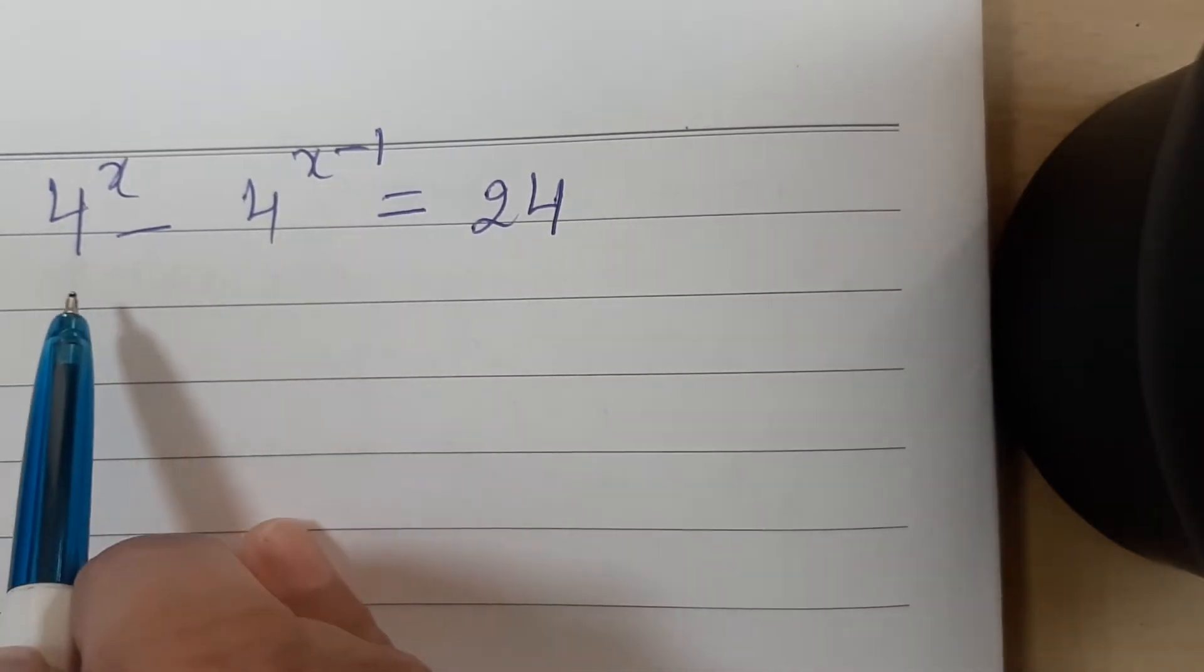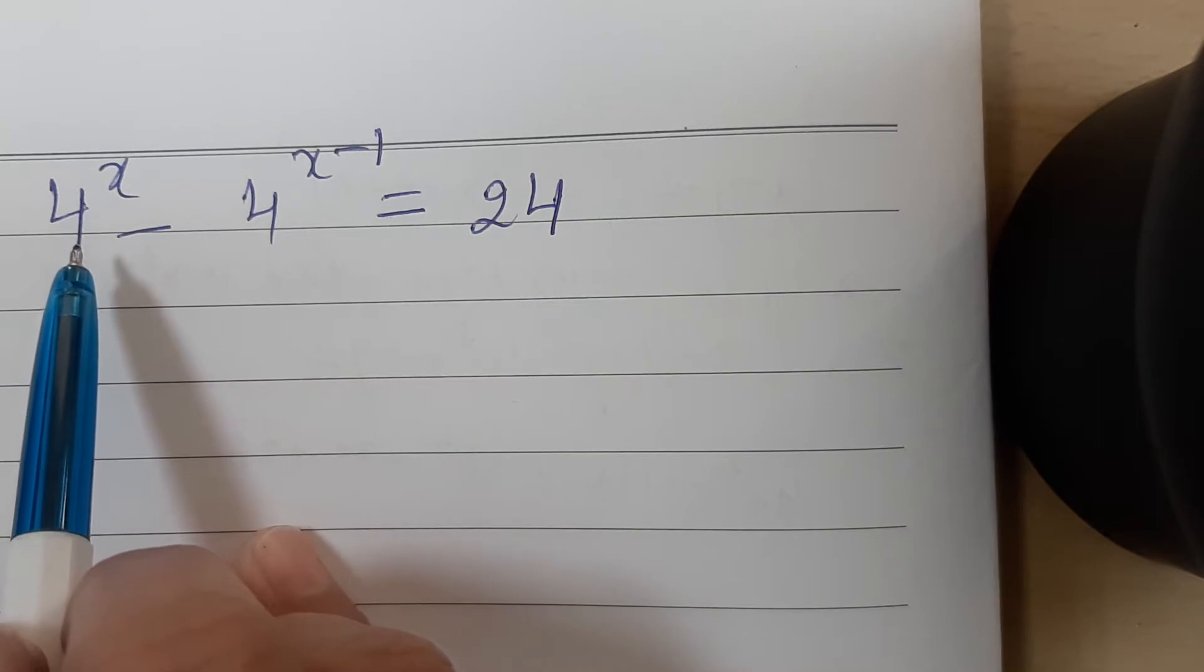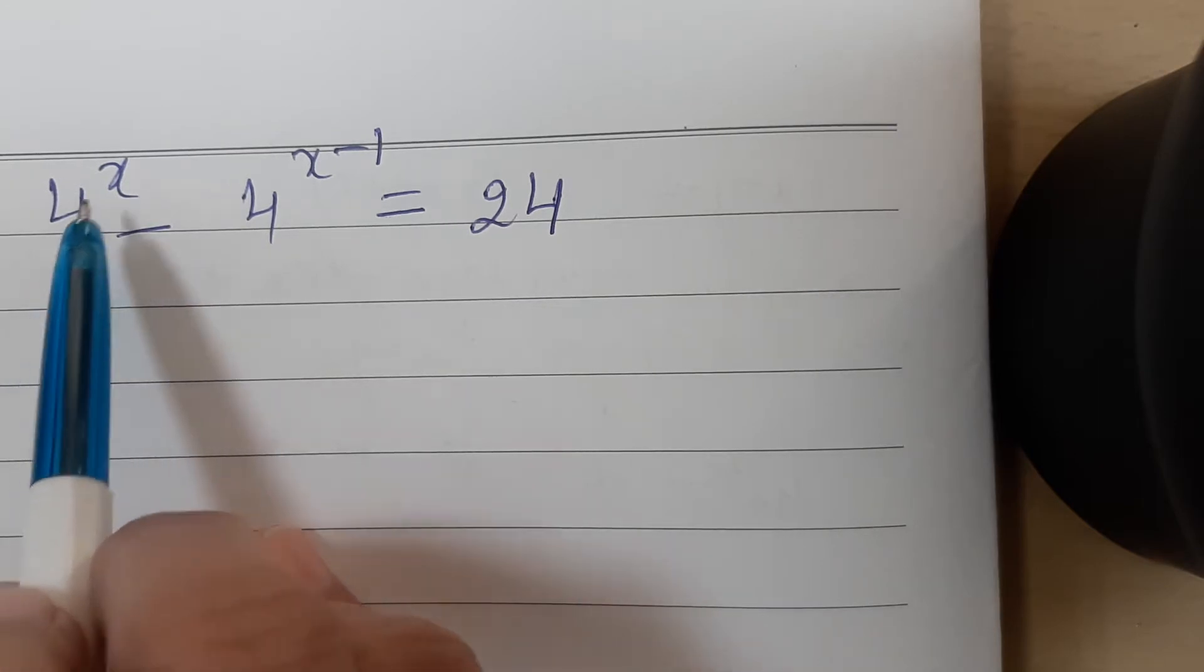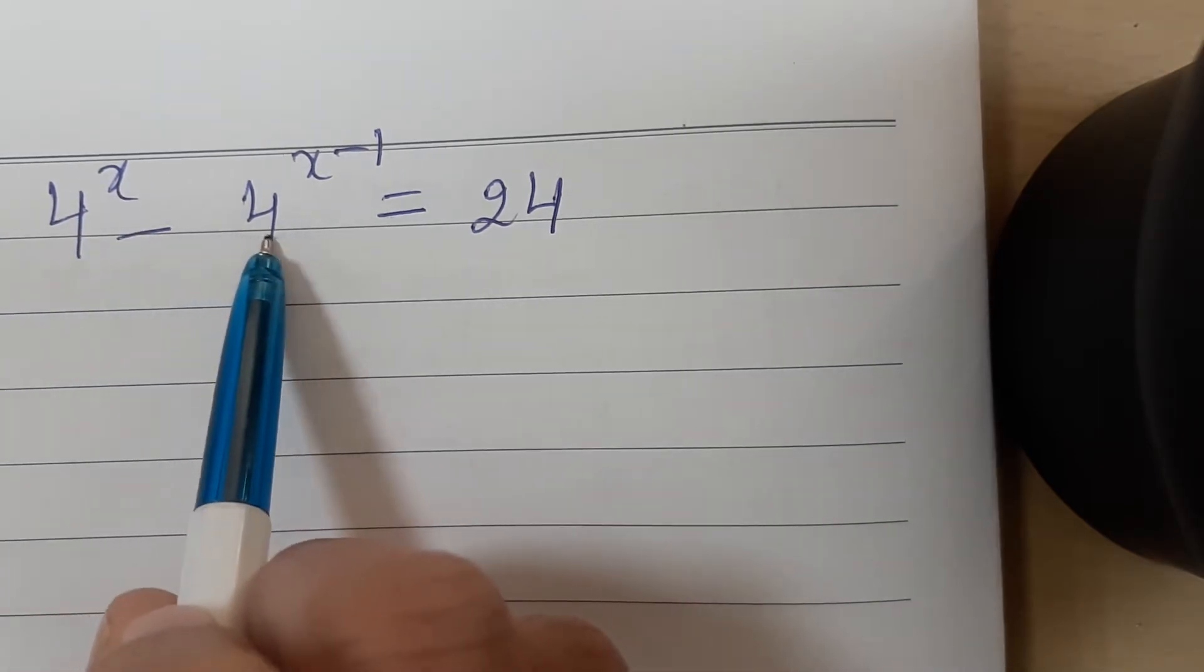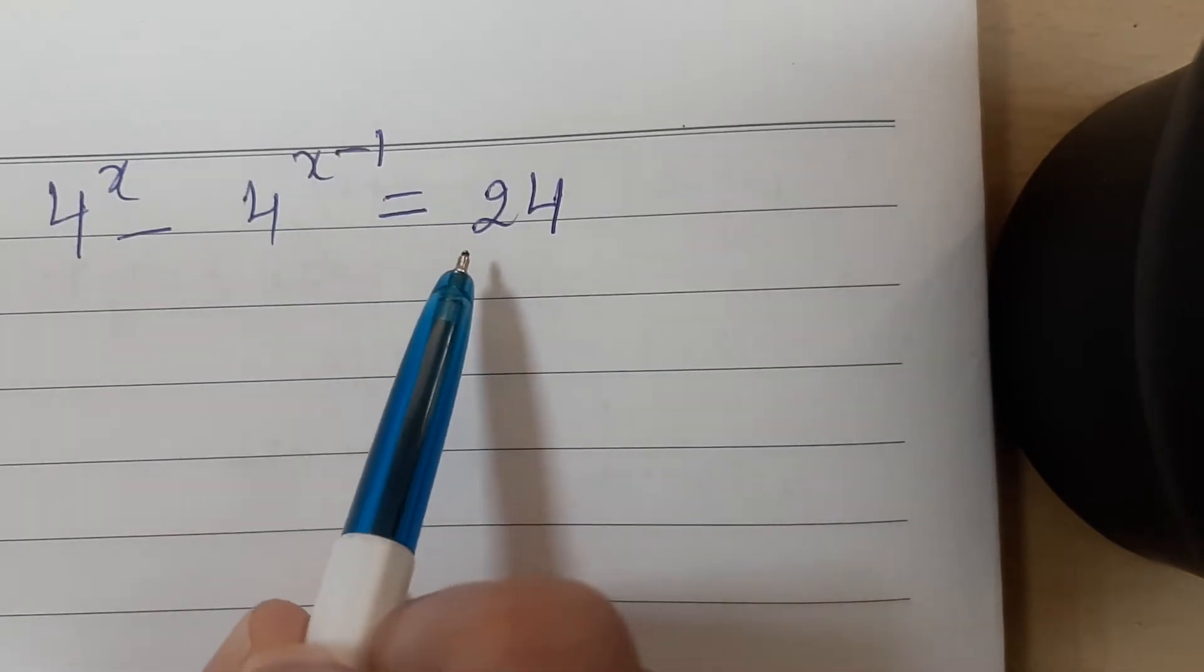Let us discuss this question now. We have to find the value of x and it is given that 4 to the power x minus 4 to the power x minus 1 equals 24.